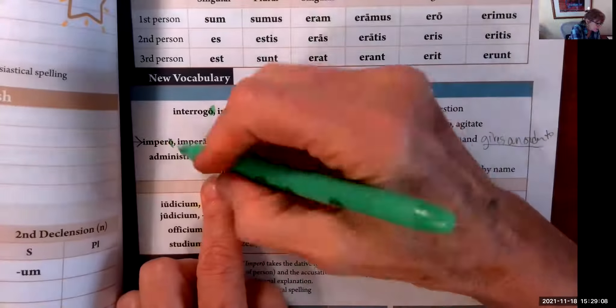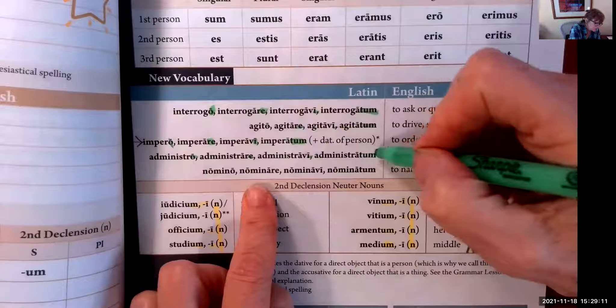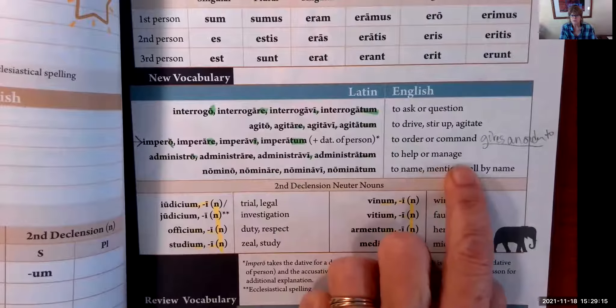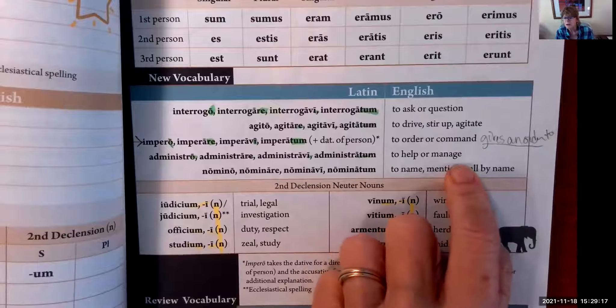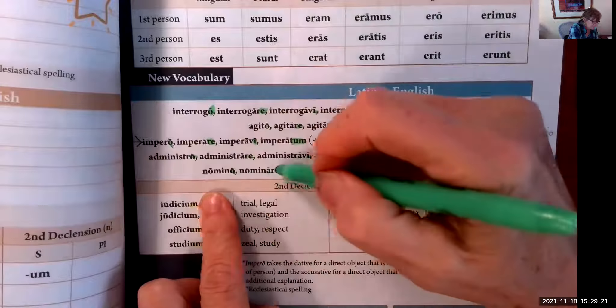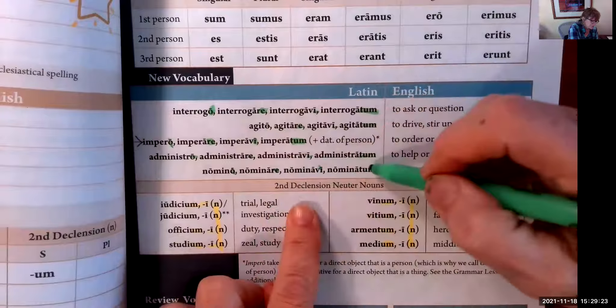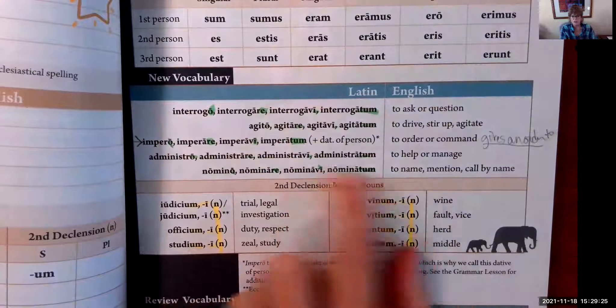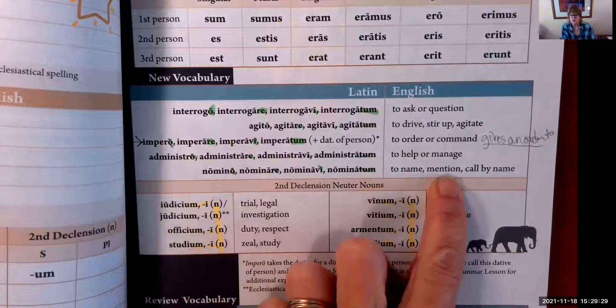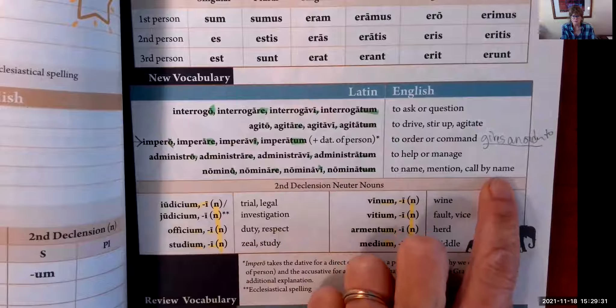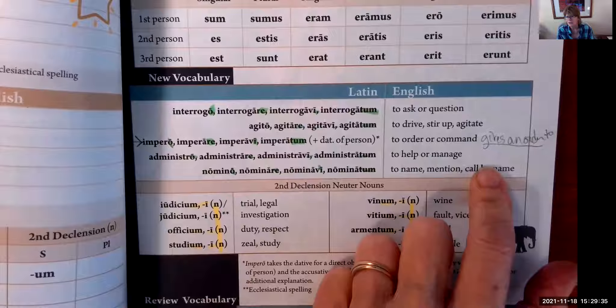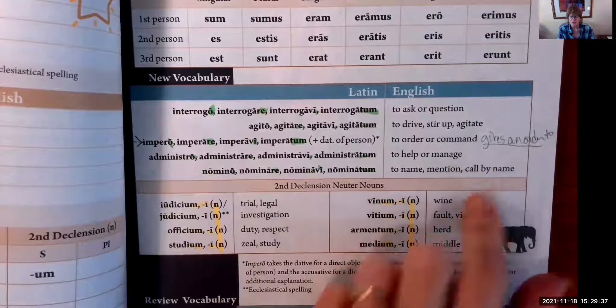Administro, administrare, administravi, administratum. It looks like 'administrate,' but someone who administrates is supposed to help or manage. Nomino, nominare, nominavi, nominatum. It looks like 'name,' doesn't it? To name, to mention, to call by name. God in the Bible calls people by name.